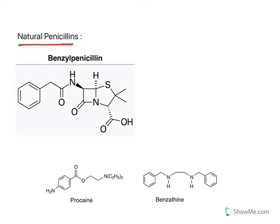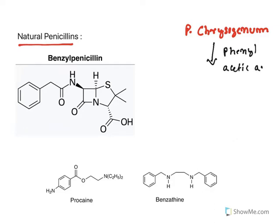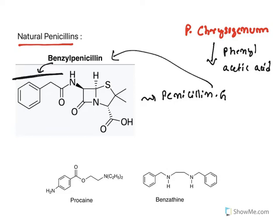The first classification is natural penicillins. Penicillins are fermented from Penicillium chrysogenum. This fungal species is fermented and from the fermentation products, natural penicillins are obtained. To get benzyl penicillin, the fermentation medium is supplemented with phenylacetic acid. When phenylacetic acid is provided, the benzyl side chain is attached, resulting in the formation of Penicillin G. Penicillin G is nothing but benzyl penicillin, and since it occurs from natural sources it is called a natural penicillin.